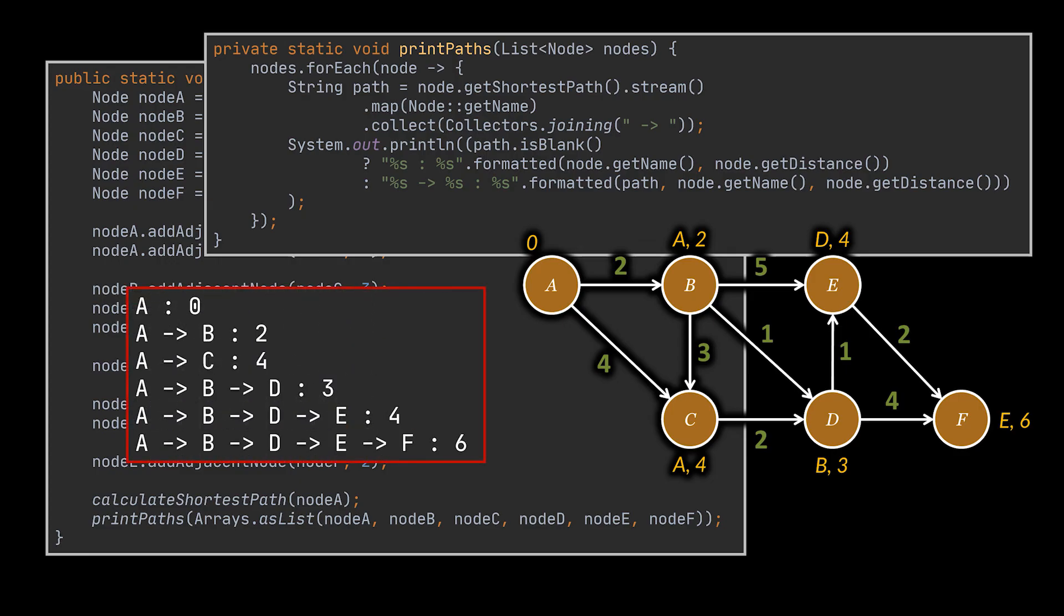As you can see, the result is the path from A to each node in the graph we created, and not any path, the shortest path, alongside its corresponding shortest distance displayed next to it.